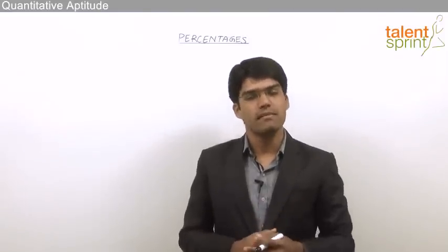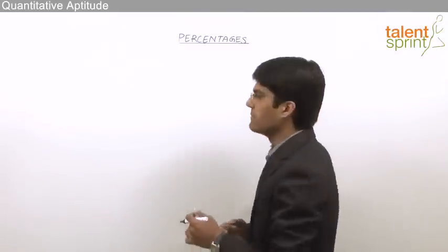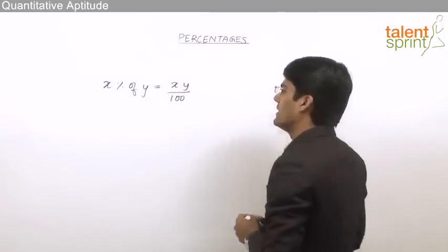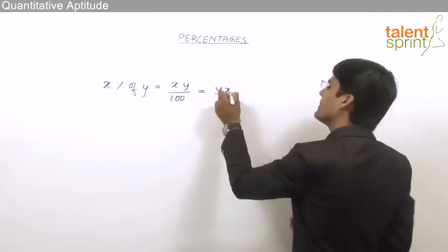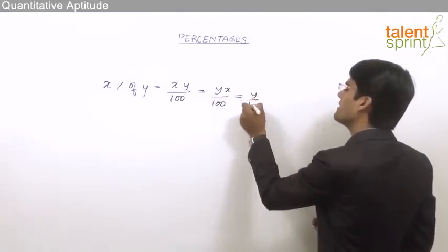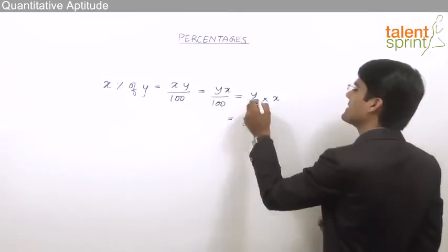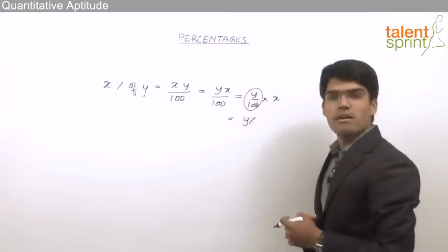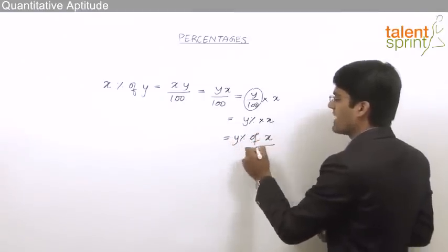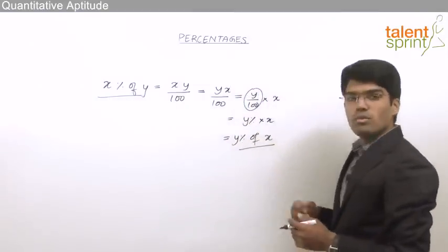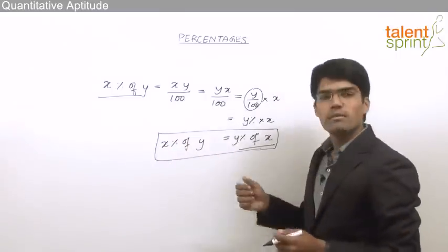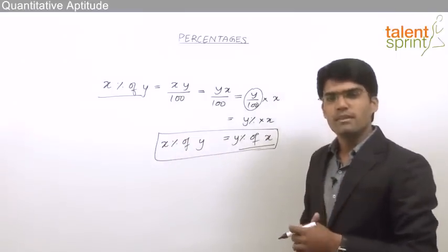The next important point: x percent of y is the same as y percent of x. We know x percent of y equals xy by 100. This can be rearranged as y into x by 100, which is y percent of x. So x percent of y equals y percent of x. Always remember that x percent of y can always be taken as y percent of x.